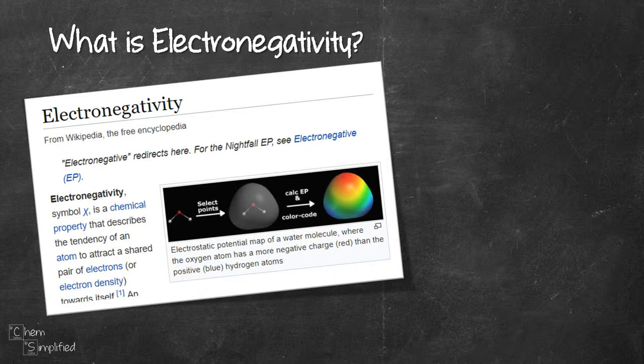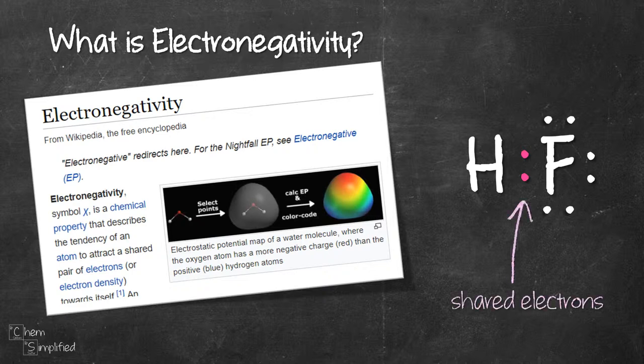Let's use HF as an example. The pink electrons in between H and F, they are the shared electrons, meaning they are the electrons that hold two atoms together.